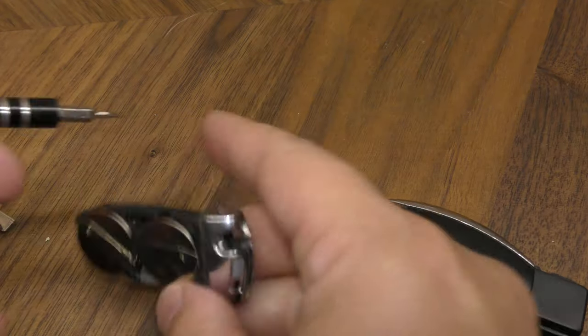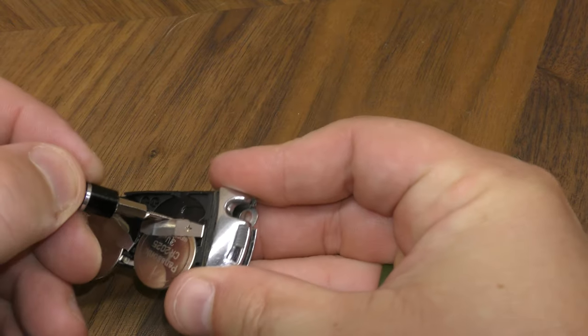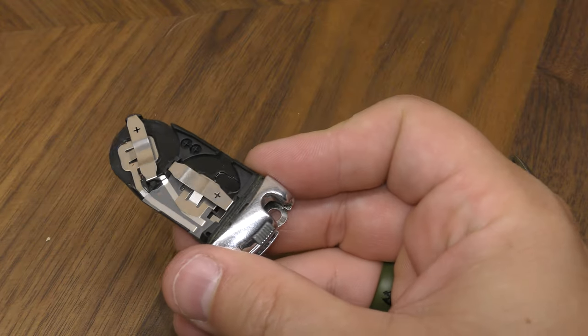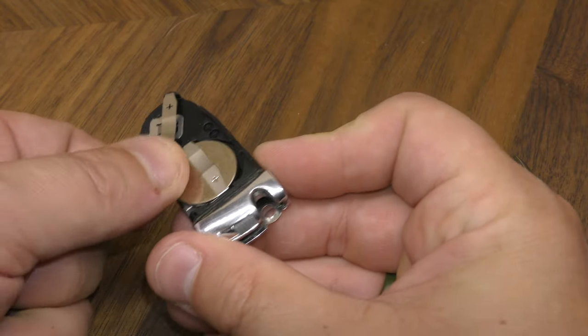Once you have the tray out, you just want to take your screwdriver and push your old batteries out. And take your new batteries, both of them go positive side facing up.